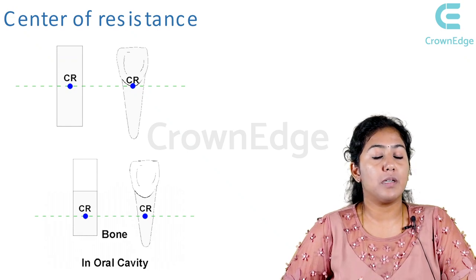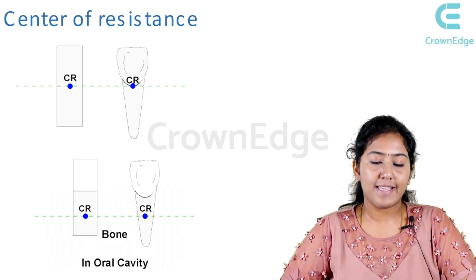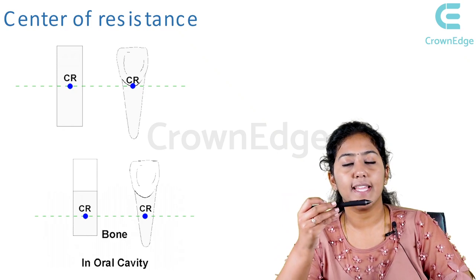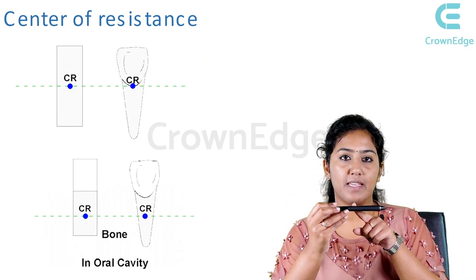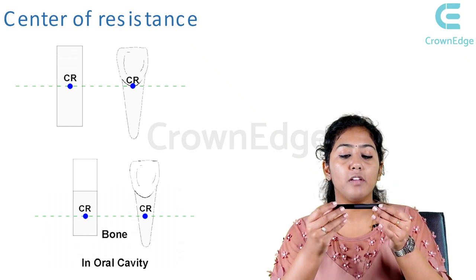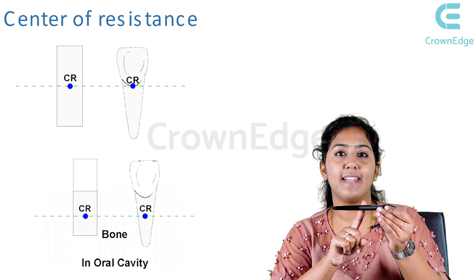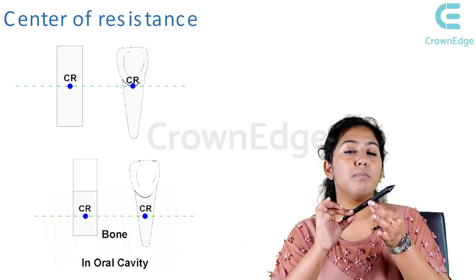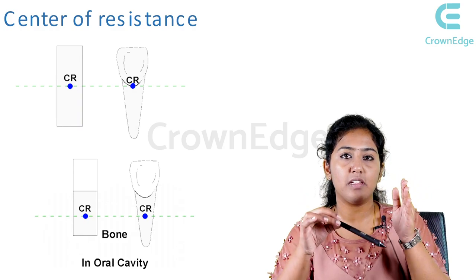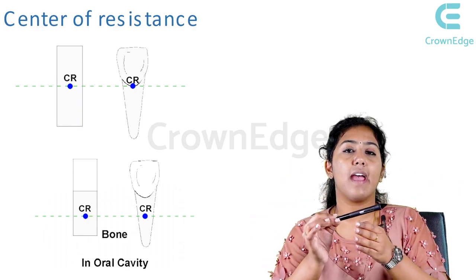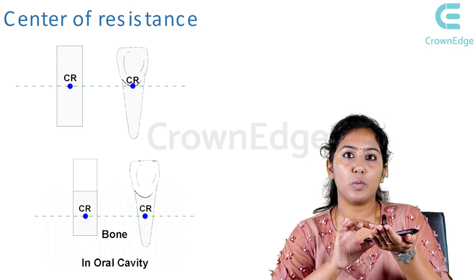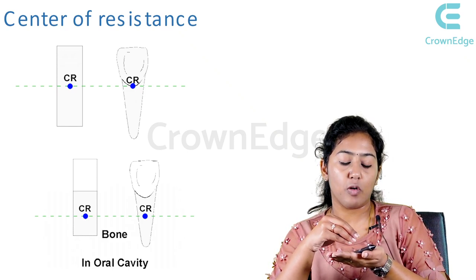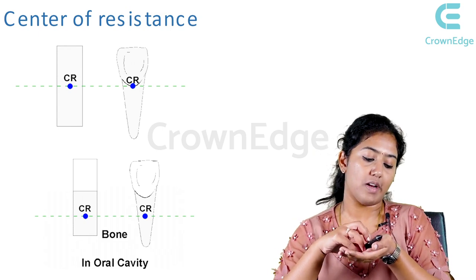Let us come to a few terminologies — the first is called center of resistance. Center of resistance is nothing but — any object, not only a tooth, but even if you take this pen, it has a center of resistance. A center of mass is present for any object. If the object is under gravity, you call it center of gravity; if there is no gravity and the object is in the air, it is called center of mass. So each and every object — a block, a pen, a book — anything can have a center of mass when kept in equilibrium.